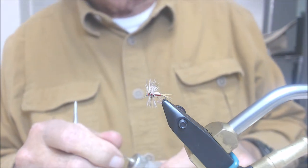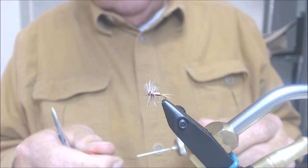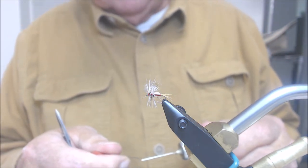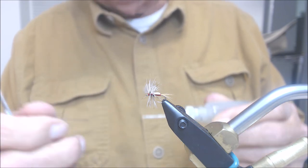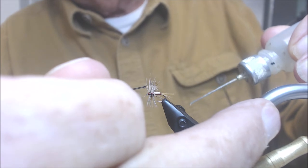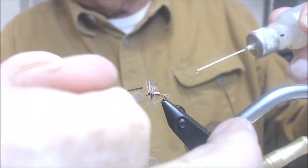And again we're going to use just a tad bit of head cement right there. Since we didn't make many wraps to hold it in place, we need something to make sure it stays. Be careful not to get this cement in the eye of the hook.